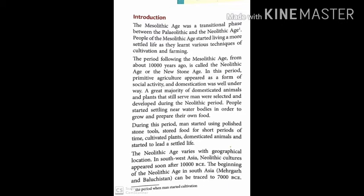In this period, primitive agriculture appeared as a form of social activity and domestication was well under way. During the Mesolithic Age — the period between the Neolithic and Paleolithic — early humans learned domestication, meaning they began keeping some animals with them. They were also learning farming, keeping animals nearby, and getting many things from them.